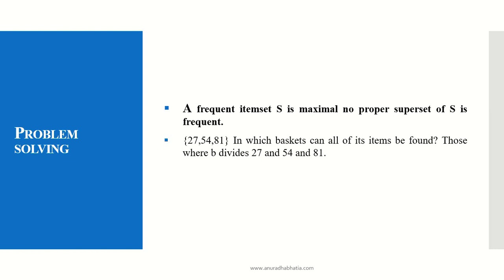Consider baskets 27, 54, 81. In which baskets can all of these items be found? Those where B divides 27, 54 and 81. These are a few association rules that we can define for 100% confidence and the baskets it belongs to are 27, 9, 3 and 1.